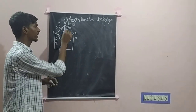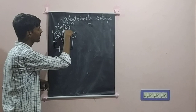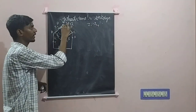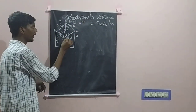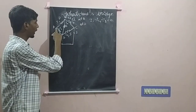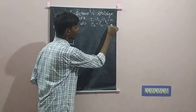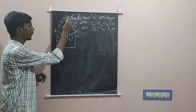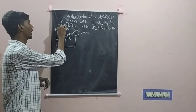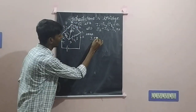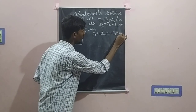We are now going to apply the current law at junctions B and D. At junction B, current I1 moves towards the junction, while IG and I3 move away. So: I1 minus IG minus I3 equals 0. At junction D, current I2 and IG flow towards the junction, and I4 flows away. Now, considering loop ABDA and applying the voltage law: I1P plus IGG minus I2R equals 0. Let this be equation 3.